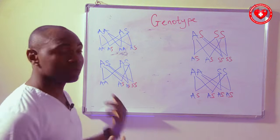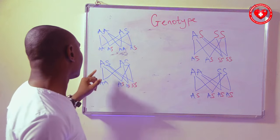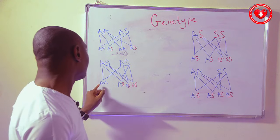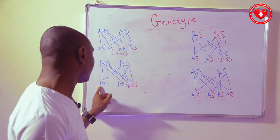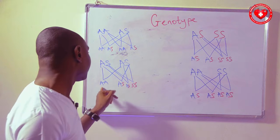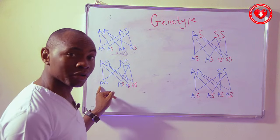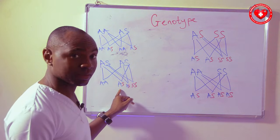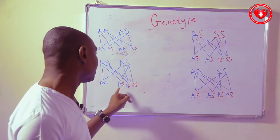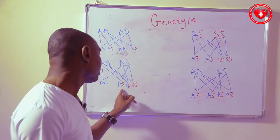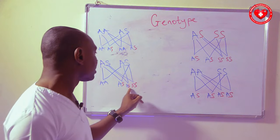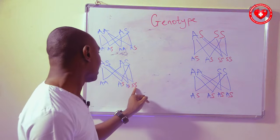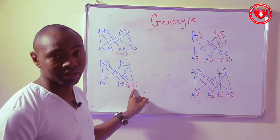However, when we have someone who is AS married to another AS person, there is a 25% chance of one child not having sickle cell traits, a 50% chance that two children will be carriers (AS, AS), and a 25% chance that one child will be SS — a sickler.